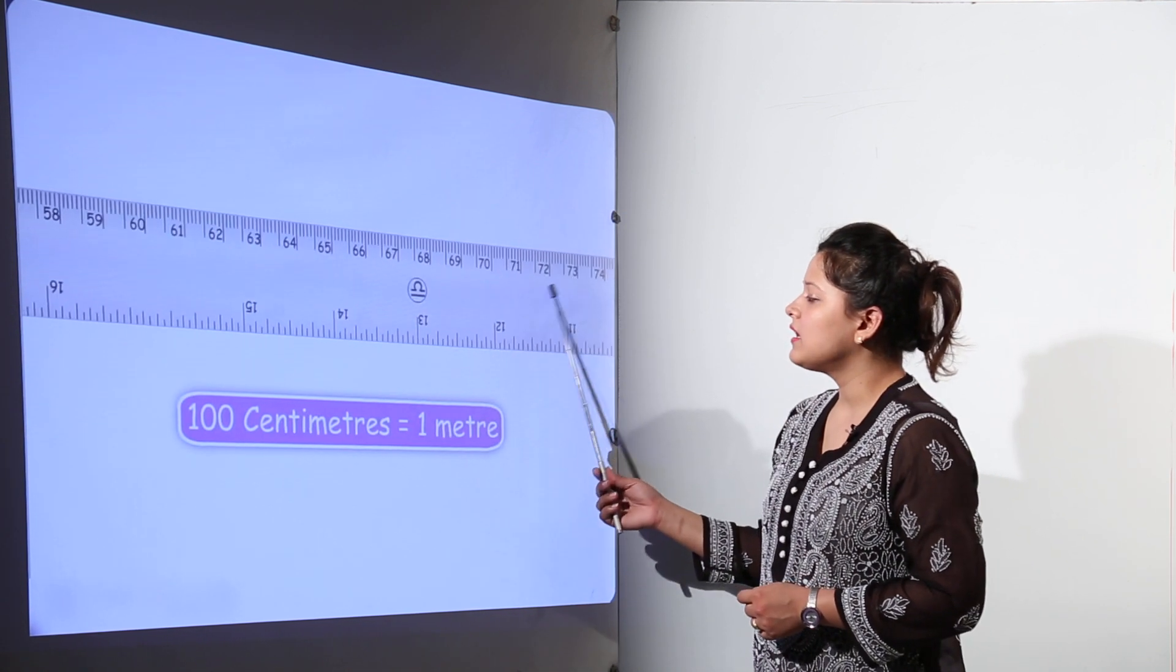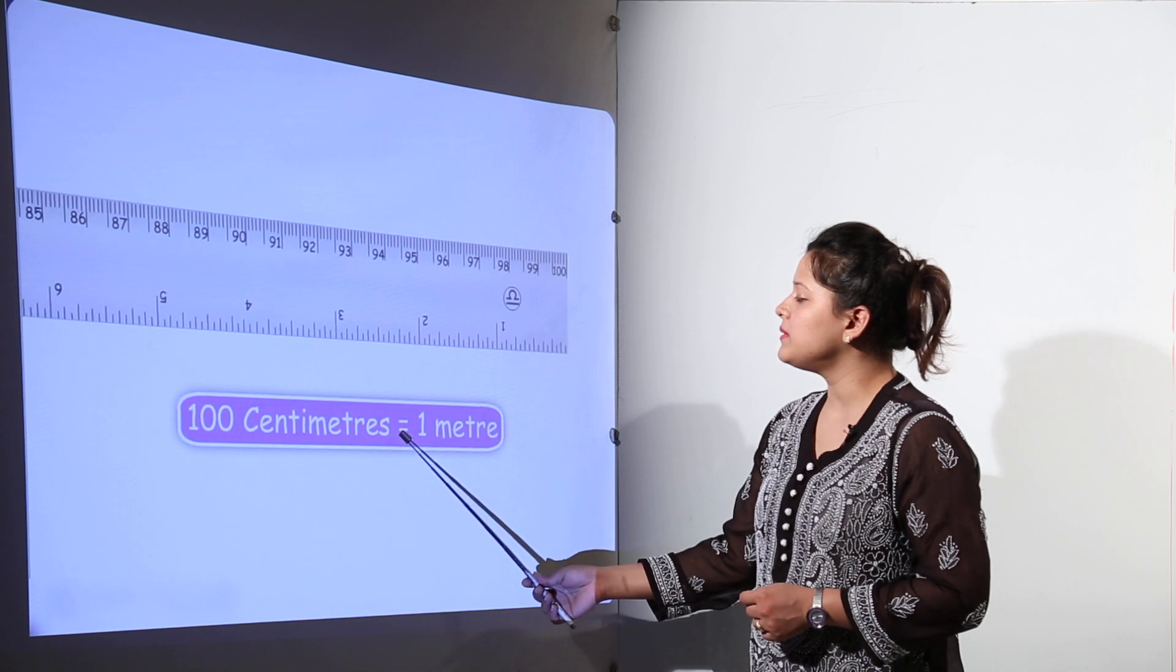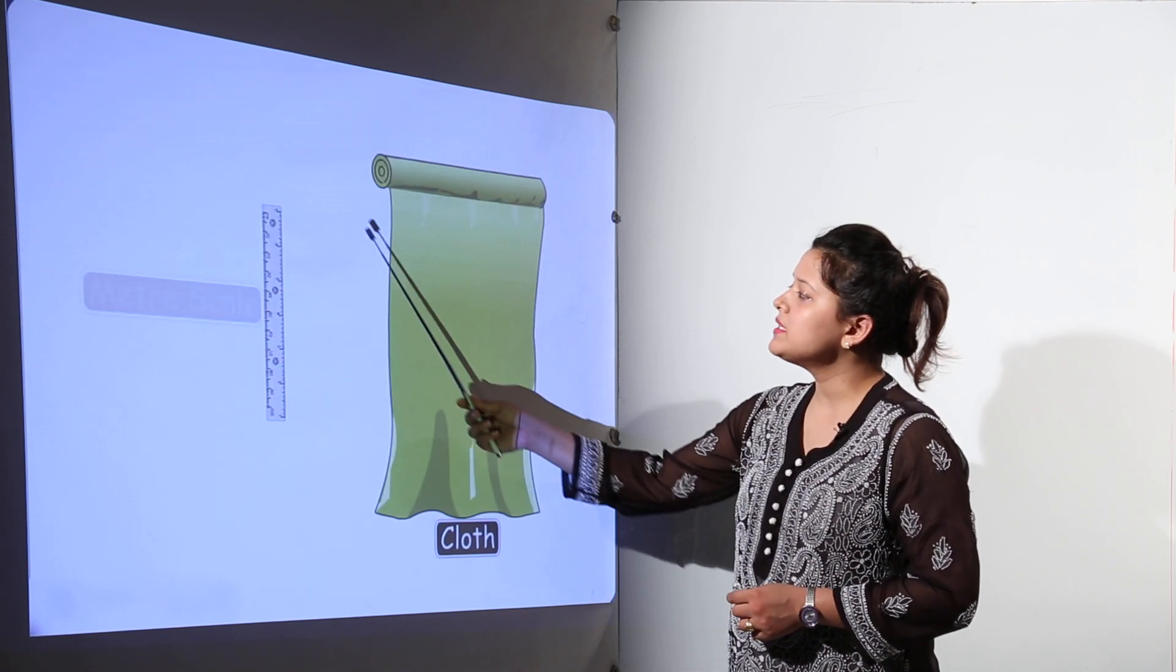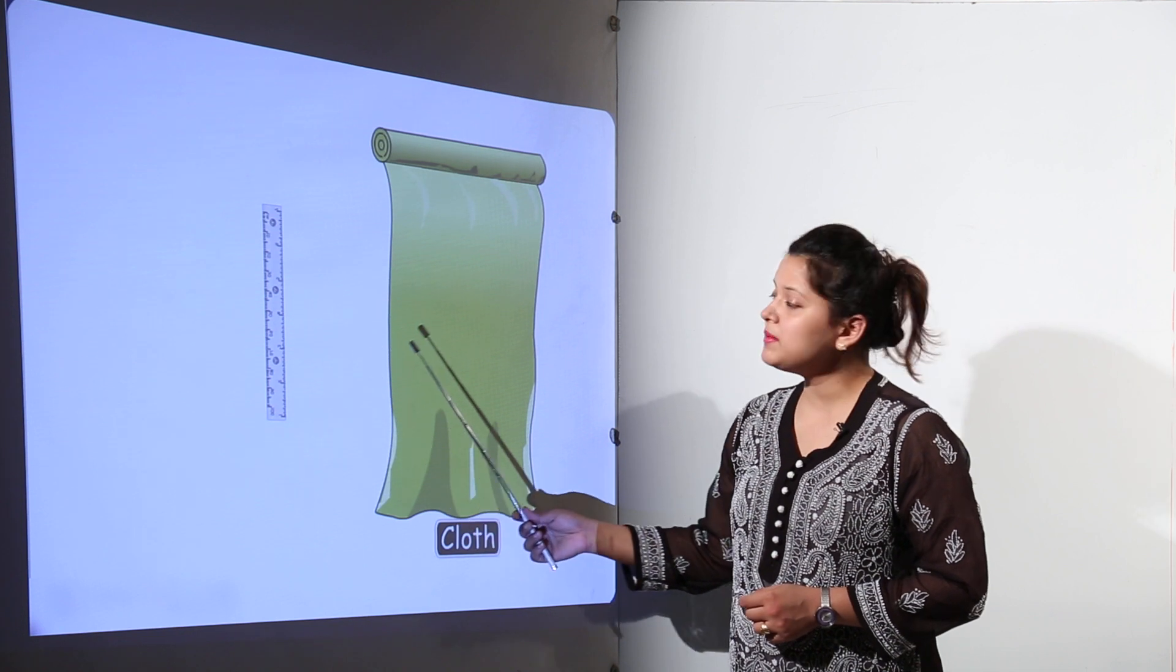We have seen the scale, right? Our scales have 100 centimeters equal to 1 meter. So a meter scale would have 100 centimeters on it.